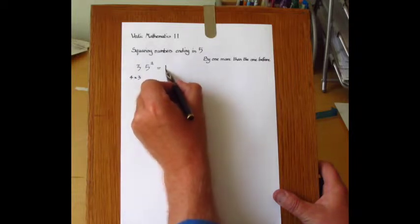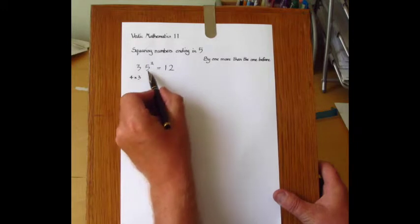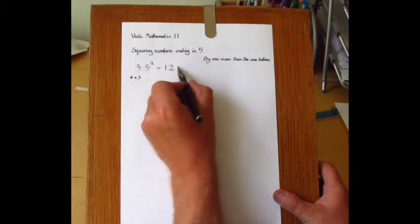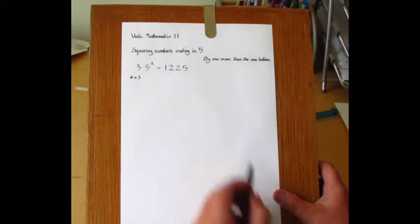the answer: 12. And then all that's required is to put down the square of 5, which is 25. So the answer is 1225.